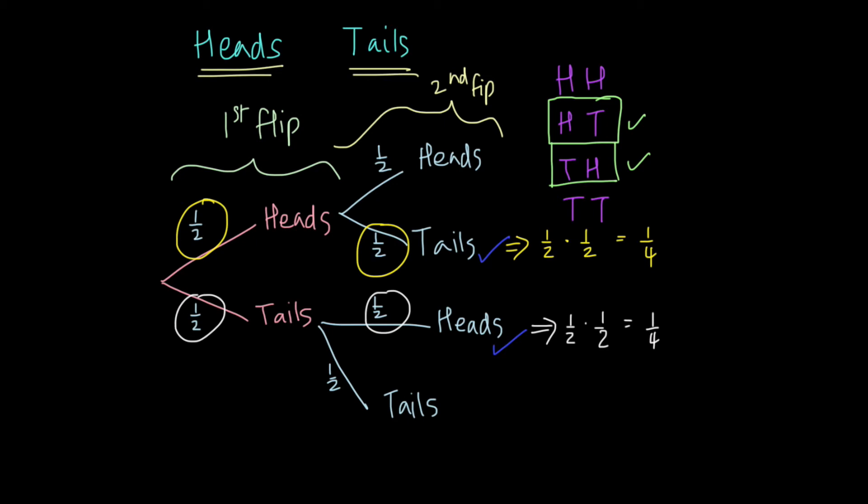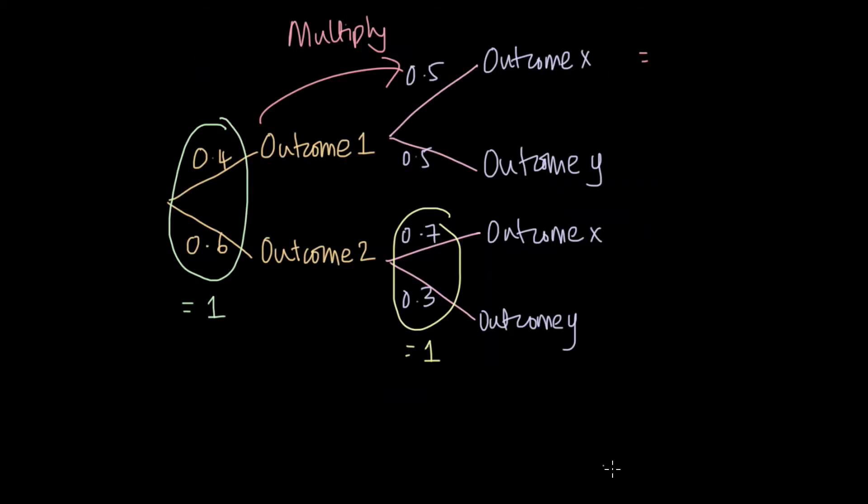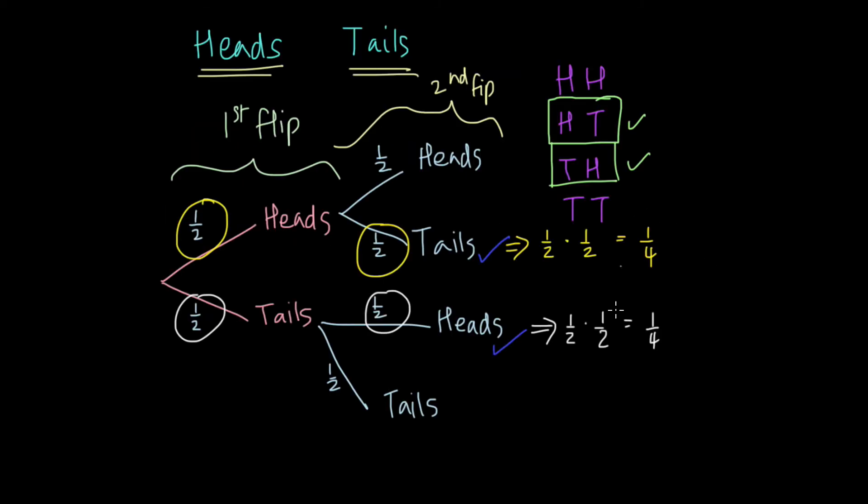And now this is where we use our second rule. The second rule was that when we're going or traversing vertically, then we add up the probabilities. When we want to find the total probability of these two events together, we add the two together. So our total probability is going to be one-fourth plus one-fourth, which is a half.